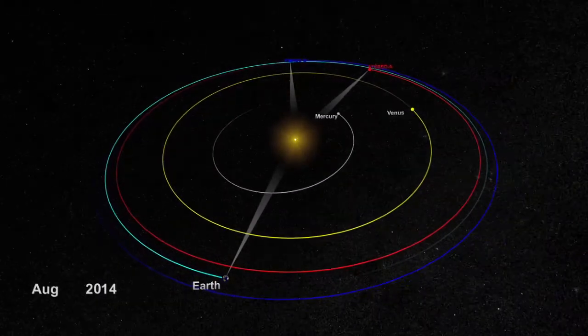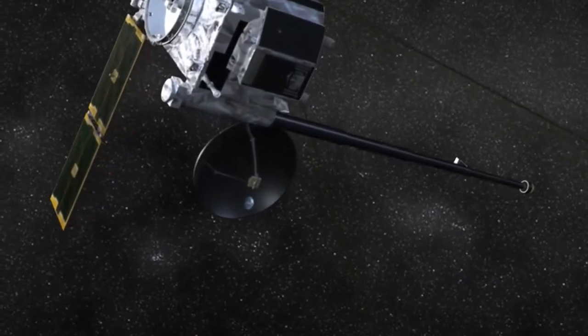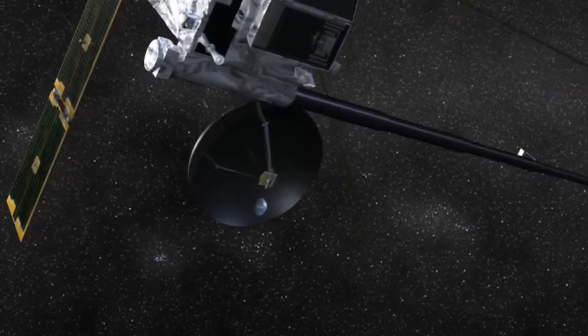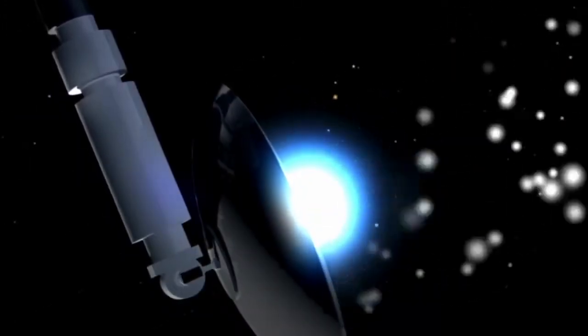In August 2014, we'll reach a situation where the high gain antenna on the STEREO spacecraft will be pointing back towards Earth but seeing too much of the sun.